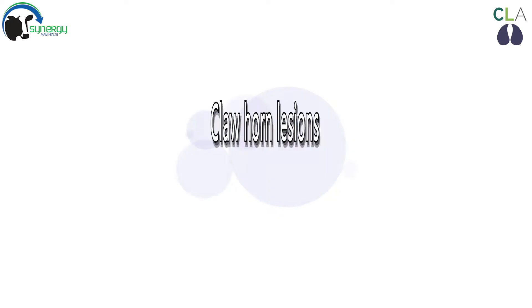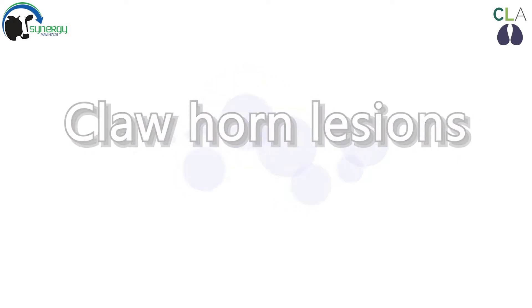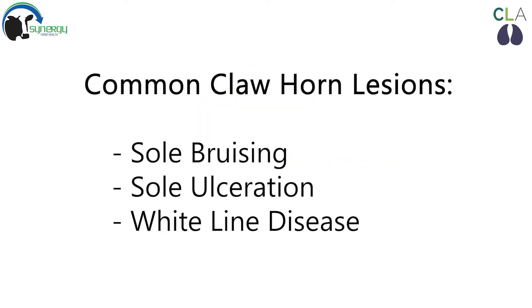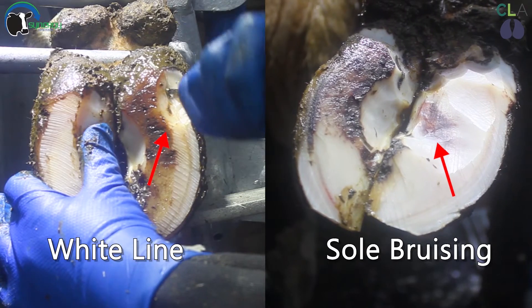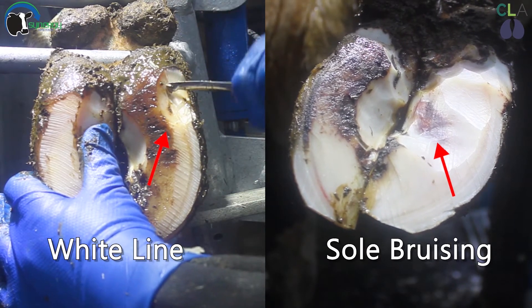Welcome to our next CLA Mobility Matters video on Claw Horn Lesions. Claw Horn Lesions are those that affect the hoof and sole. The three most common Claw Horn Lesions are sole bruising, sole ulceration, and white line disease.